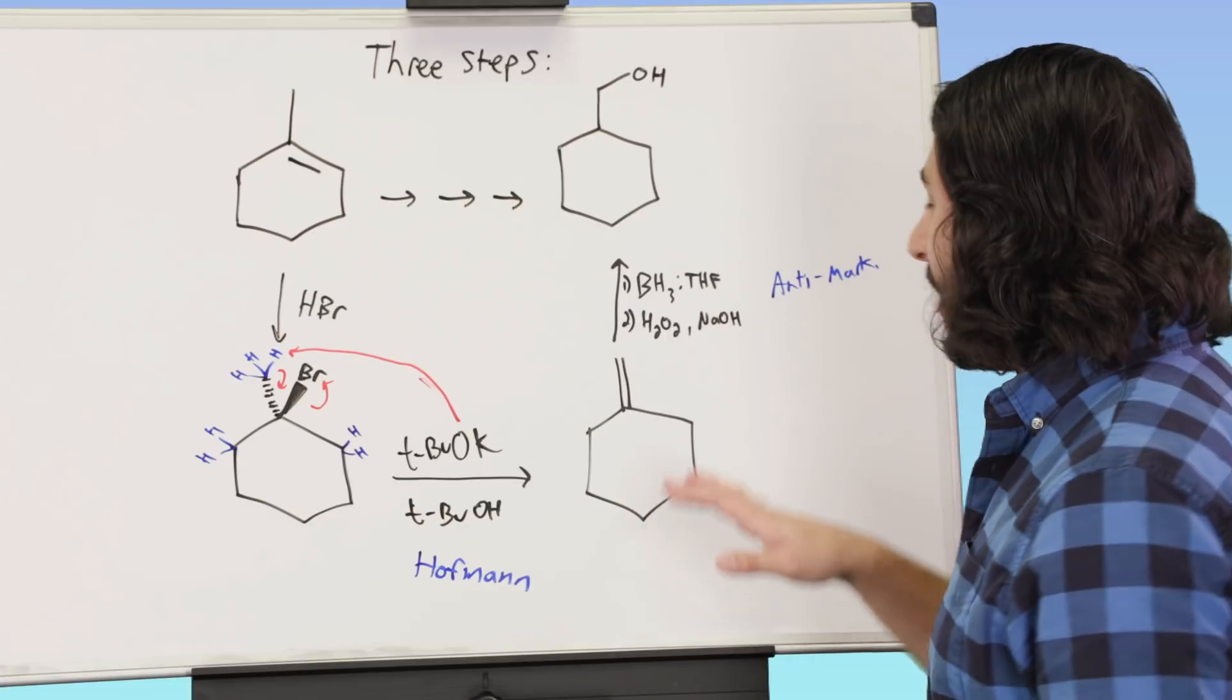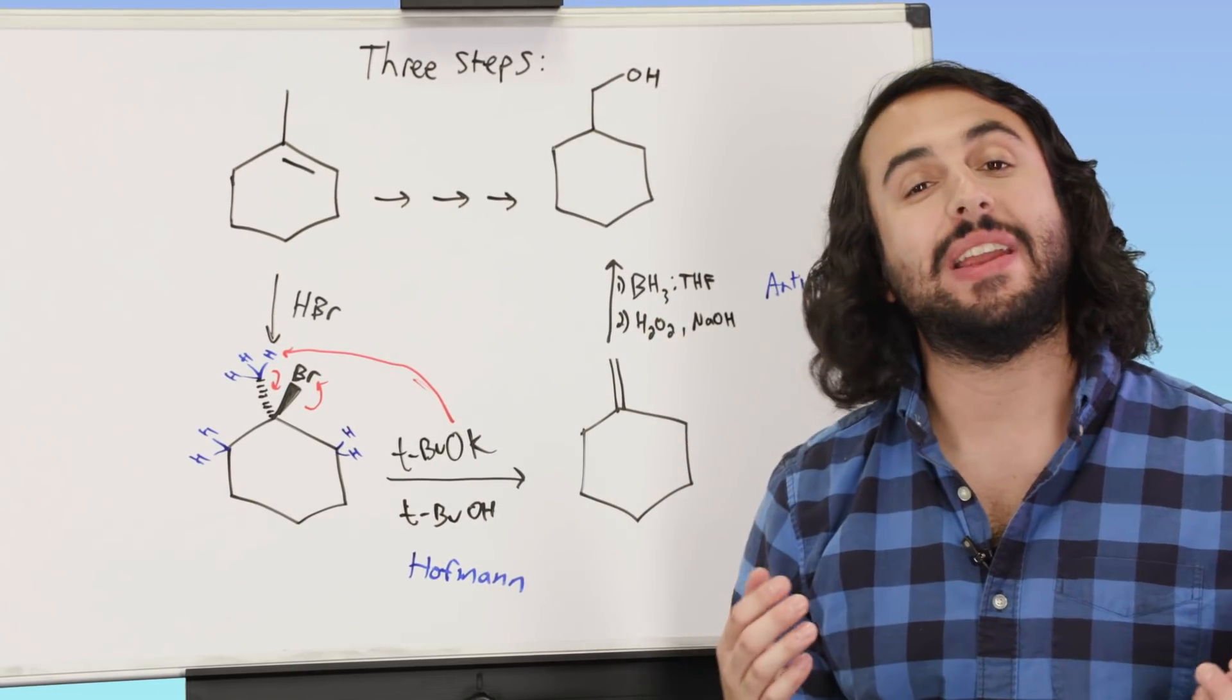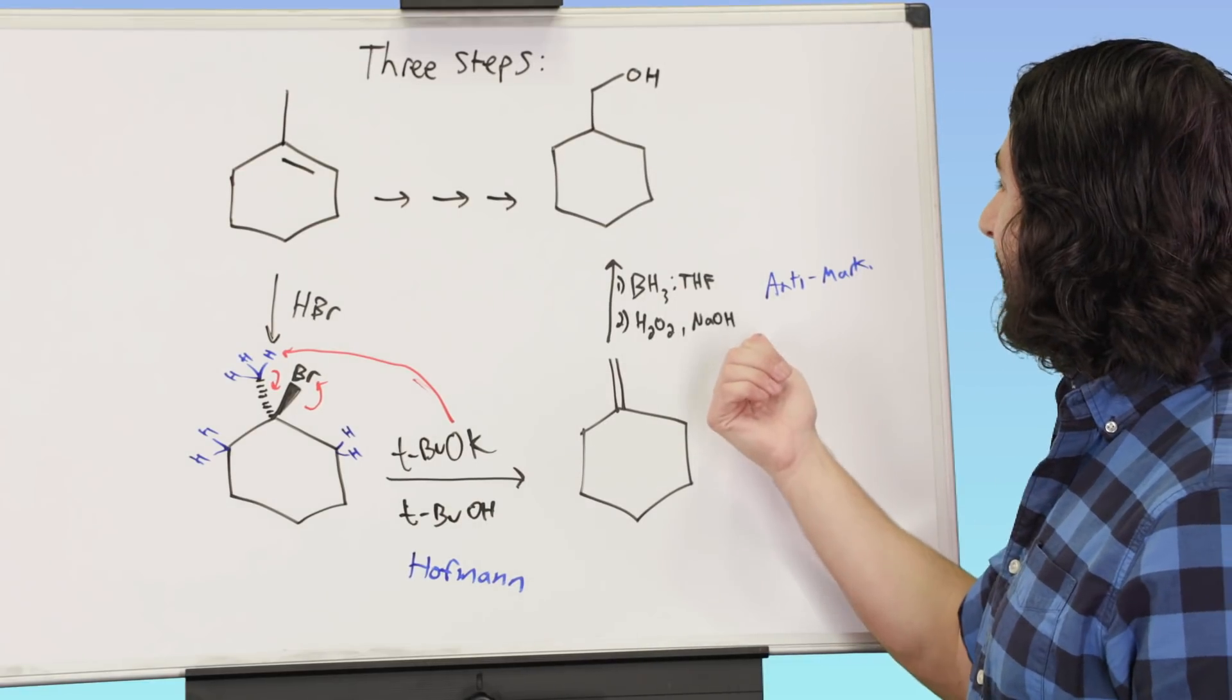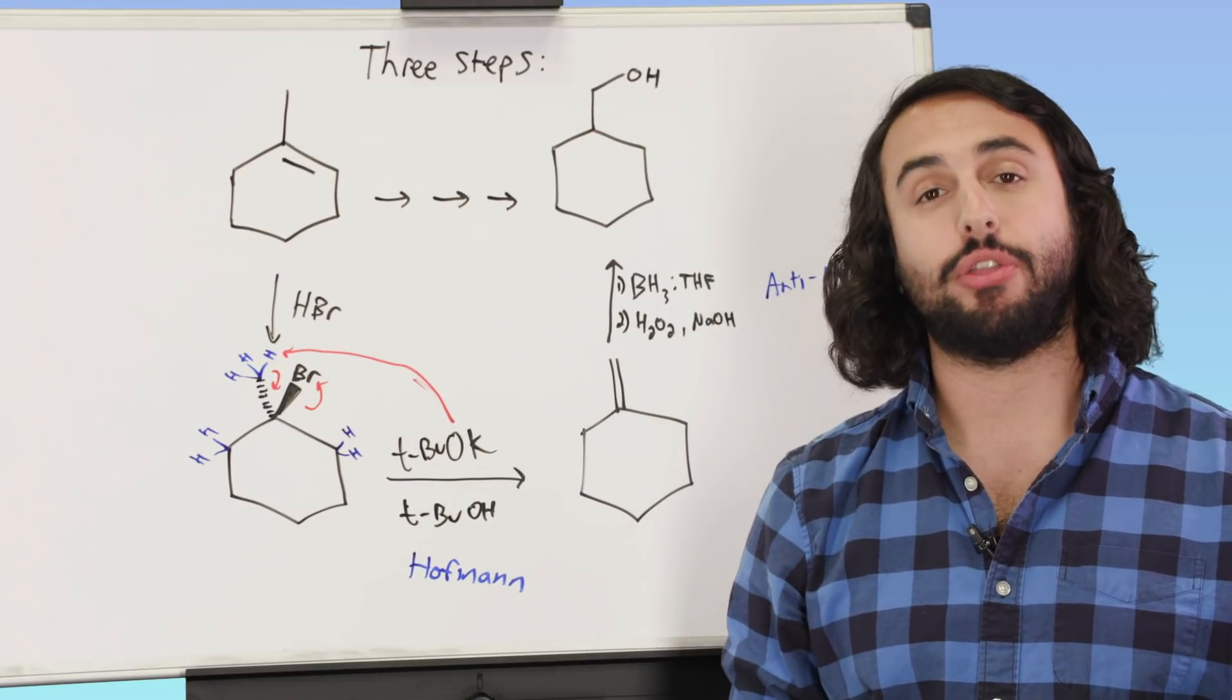And that got us to this intermediate right here, and then from there we knew that we wanted to do hydration, and we understood that we needed to do an anti-Markovnikov hydration. So we did our hydroboration oxidation, and we've got our desired product. So that's a nice little three-step synthesis.